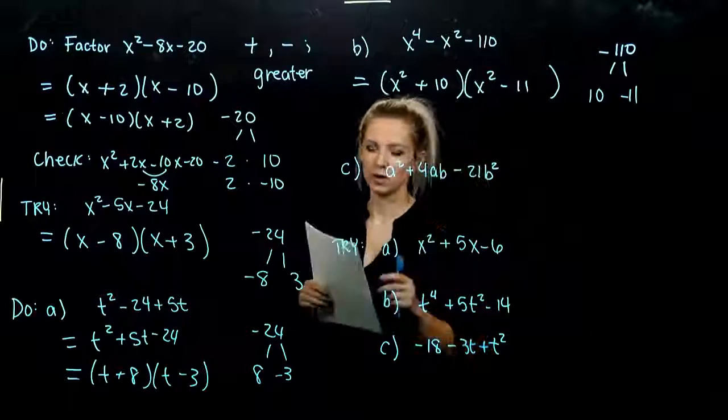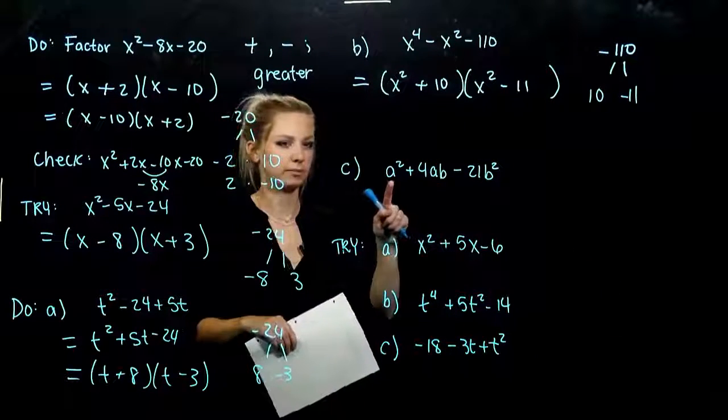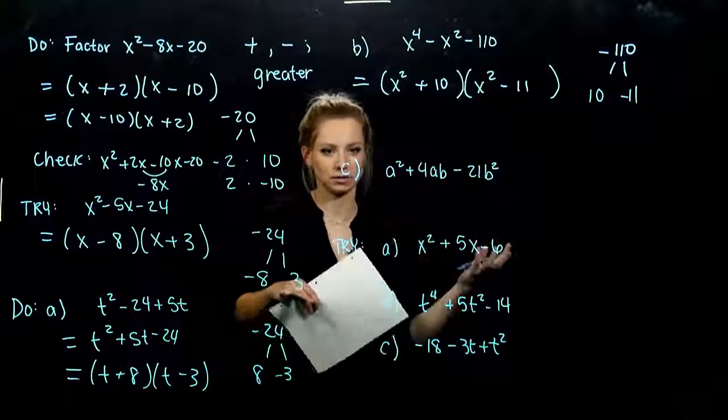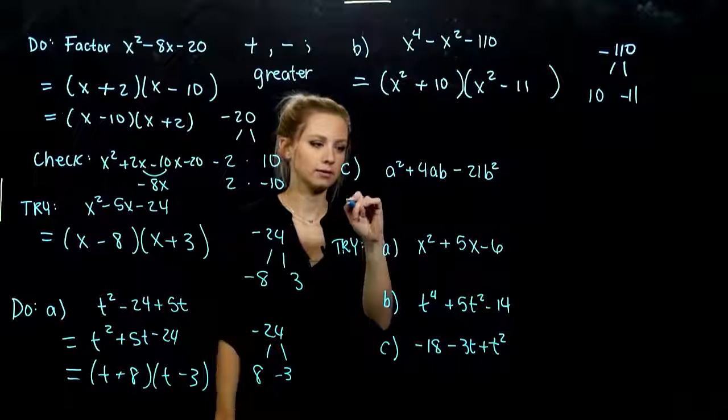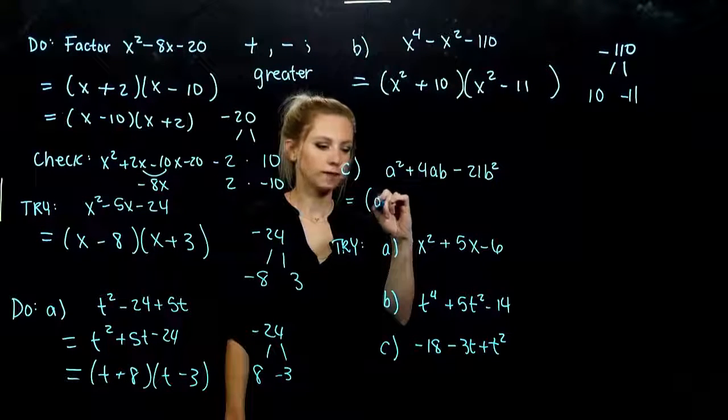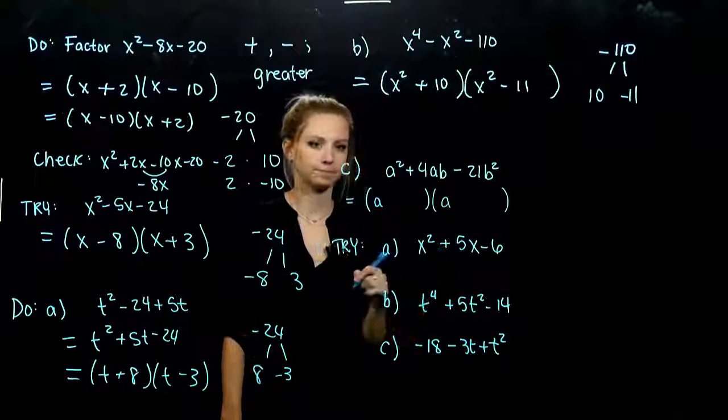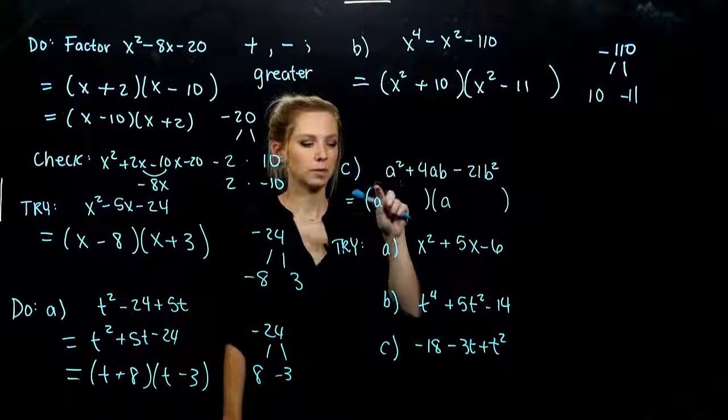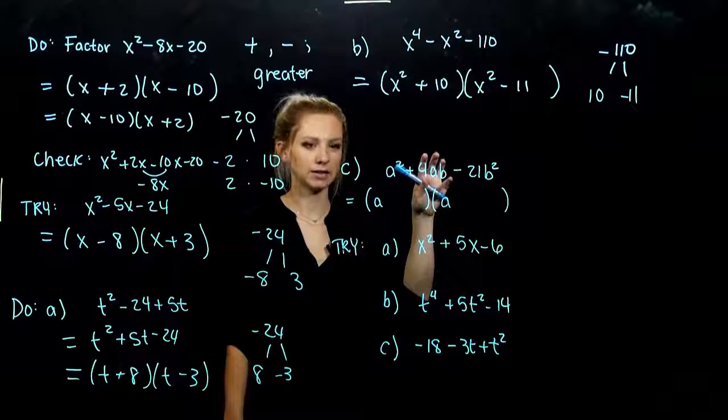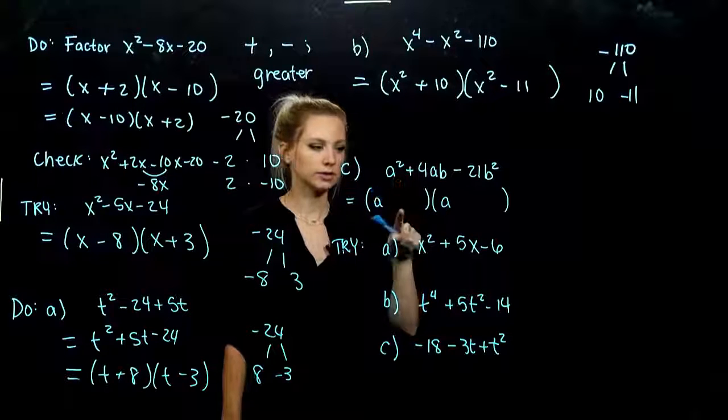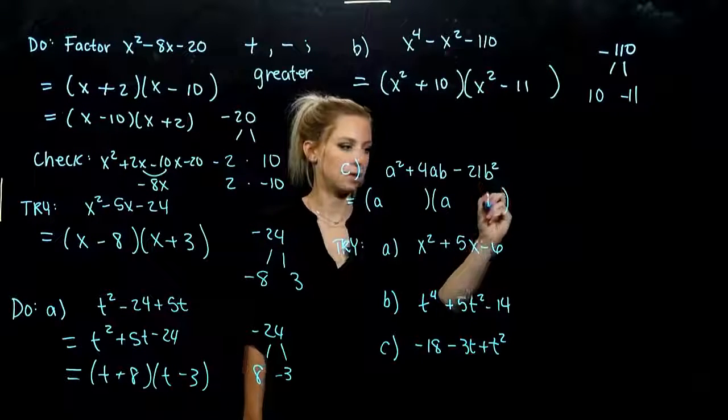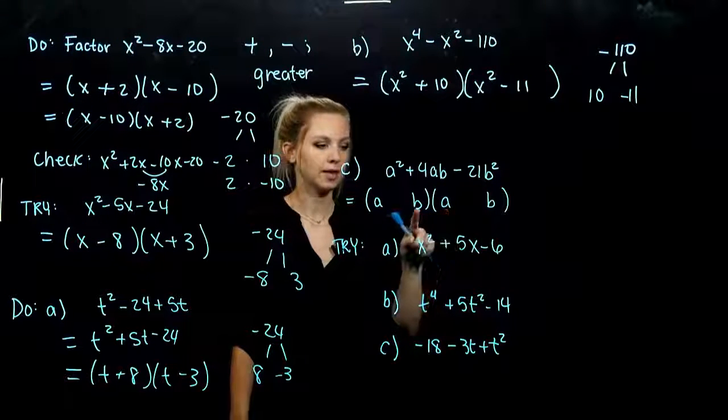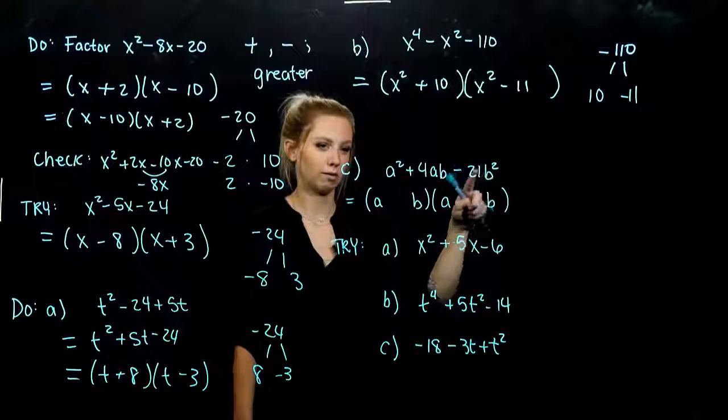And for part C, we kind of have mixed variables now. But again, the middle term is going to tell us how to break up the first and the last. Because I know I'm going to need one factor of A and one factor of A in the front. Because when I FOIL, I need it to give me A squared. But when I do my outer and the inner, I need a mix of AB. So what does that mean for these two terms? We need to have a B here and a B there. So we'll have a mix, AB, AB. And then last, we need a factor of B squared.